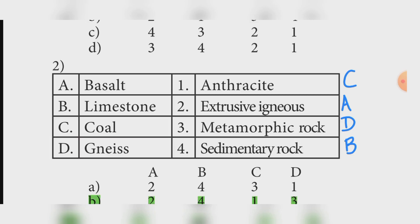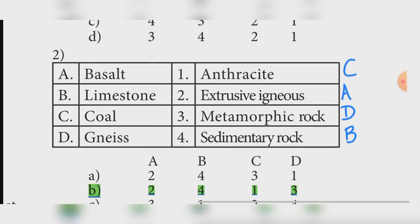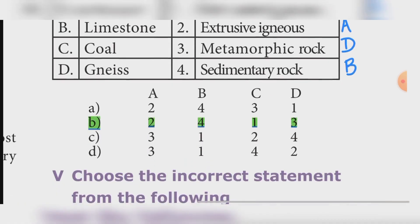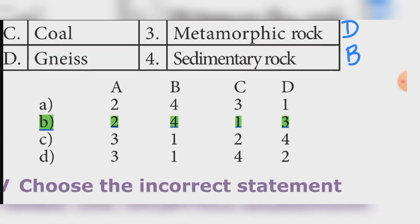Last matching item: Gneiss — Metamorphic rock. The answer is Option B — 2, 4, 1, 3 is also correct.